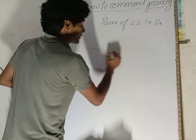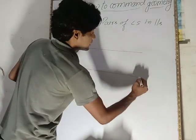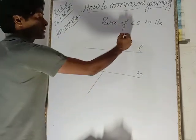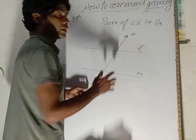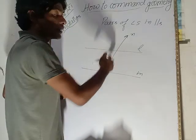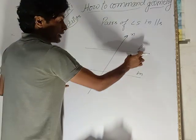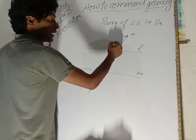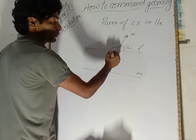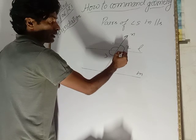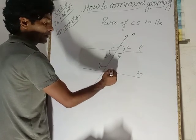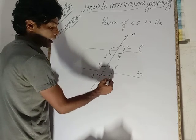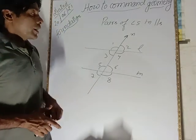Pairs of angles in parallel lines. Suppose LM are parallel lines and N is the transversal — the line which intersects the parallel lines. Here you get angle 1, angle 2, angle 3, angle 4, angle 5, angle 6, angle 7, and angle 8.